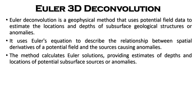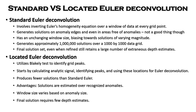This method calculates Euler solutions, providing estimates of depths and locations of potential subsurface sources or anomalies. In performing the process of Euler deconvolution, two methods are basically used: the standard Euler deconvolution and the located Euler deconvolution. They are both similar but have their basic differences.